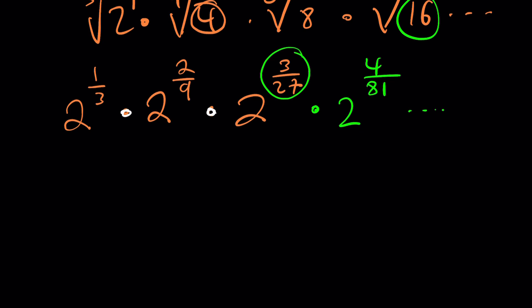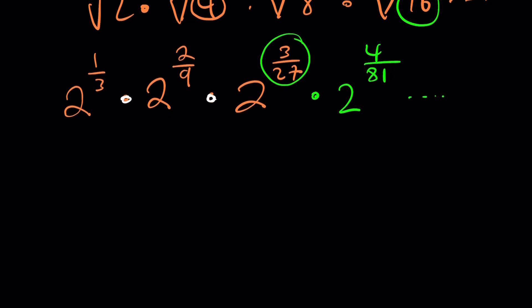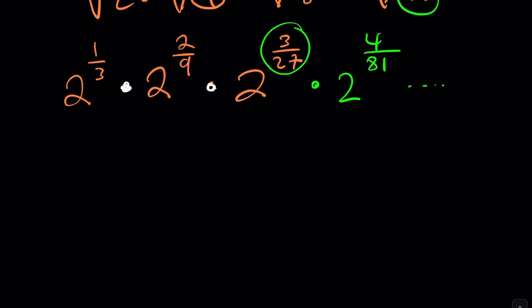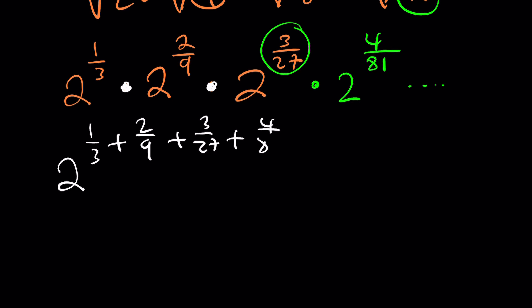We're going to go ahead and add these powers up. Notice how nicely something infinitely radical turns into something exponential — and working with exponentials is fun. We get 2 to the power of one third, plus two ninths, plus three over 27, plus four over 81. The numerators of these fractions are consecutive integers: one, two, three, four. The denominators are powers of three: three to the first, three to the second, three to the third, three to the fourth.